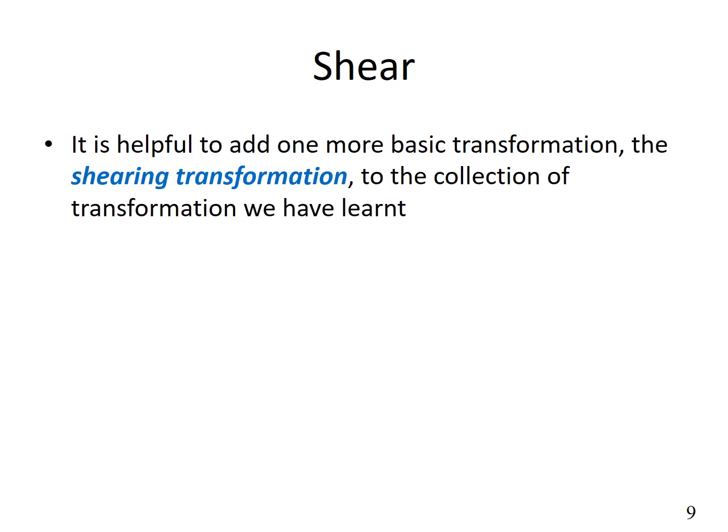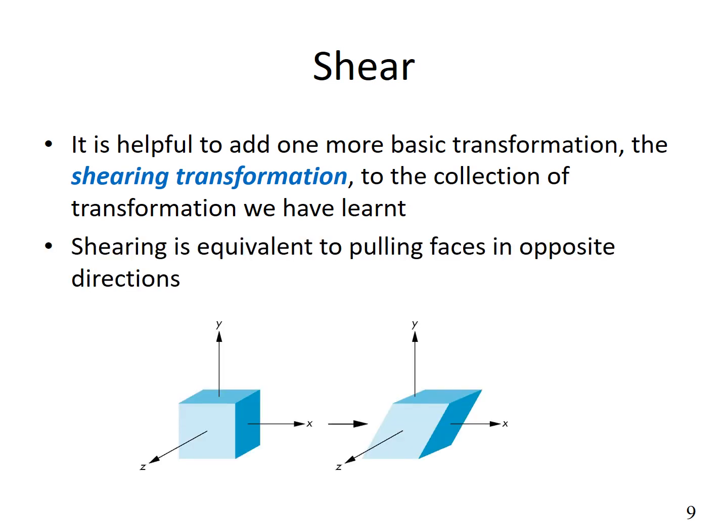Let's look at one more transformation: the shearing transformation. Shearing is equivalent to pulling faces in opposite directions. For example, consider this cube. If we pull these vertices in this direction, we will get a deformed cube like this. This kind of transformation is called shearing transformation.